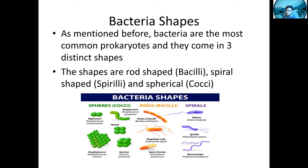Bacteria are the most common prokaryotes and come in three distinct shapes. Rod-shaped bacteria are called bacilli. Spiral-shaped are called spirilli. And spherical-shaped are called cocci. You can see examples here, such as streptococcus, salmonella, and H. pylori.